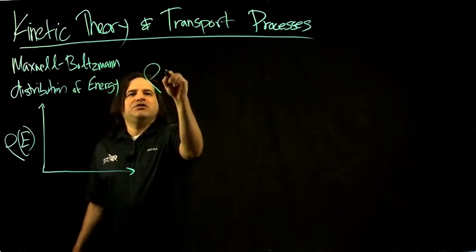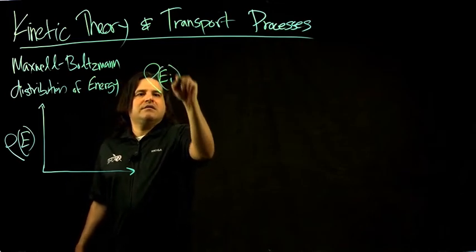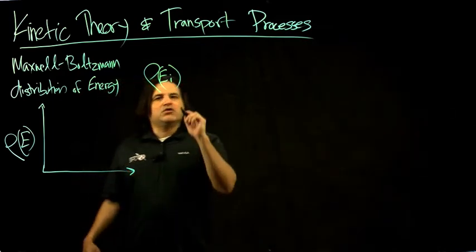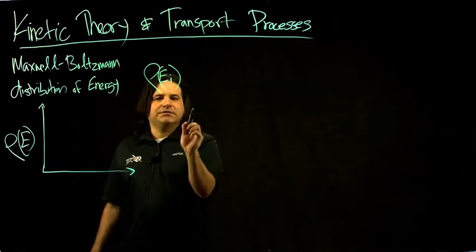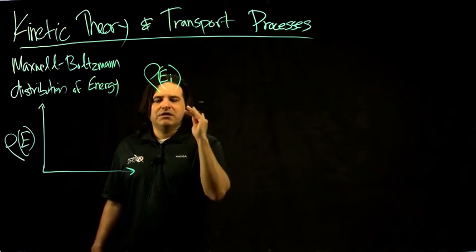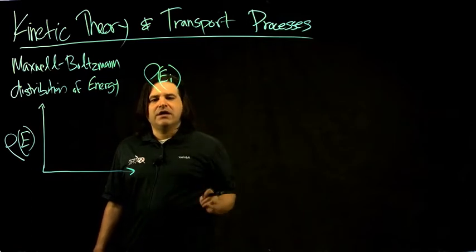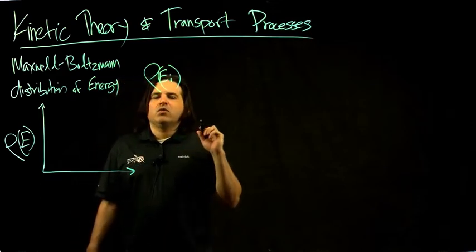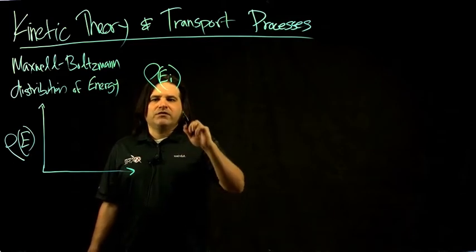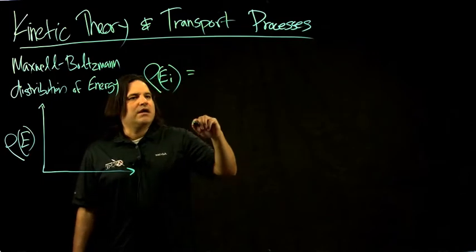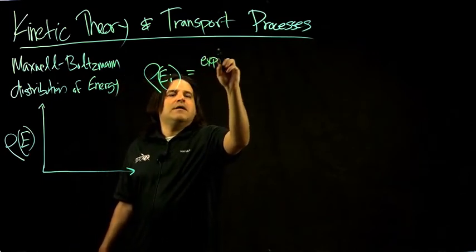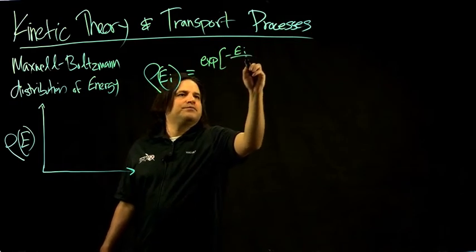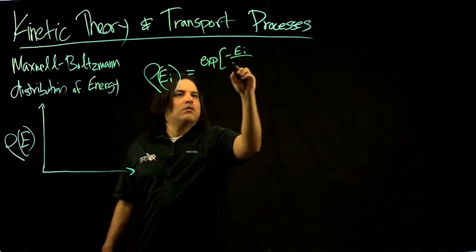What Boltzmann postulated was that if you have an ensemble of molecules in the gas specifically, you can draw a profile of their energies, and their energies are not all the same. Each pocket of gas has a different energy distribution—some are slower, some are faster. He connected this to assume that if we don't worry about potential energy yet, we can assign this energy to kinetic energy, and we can say that each individual molecule has a certain energy level weighted by temperature.